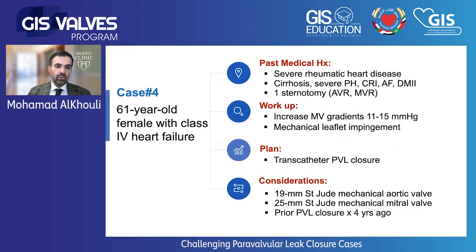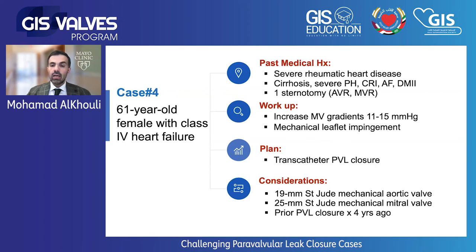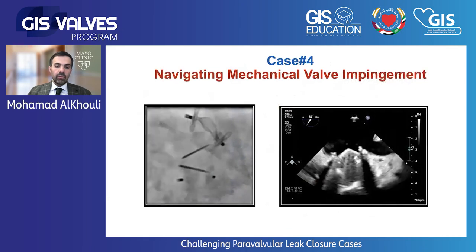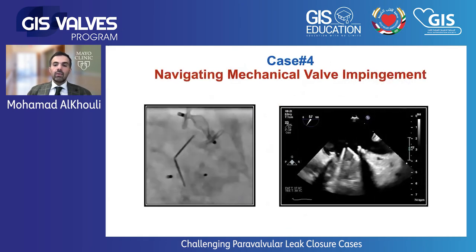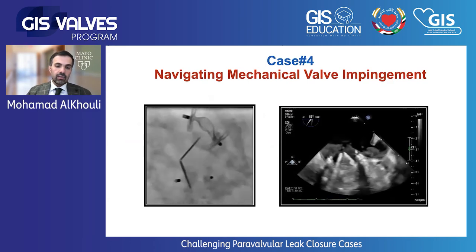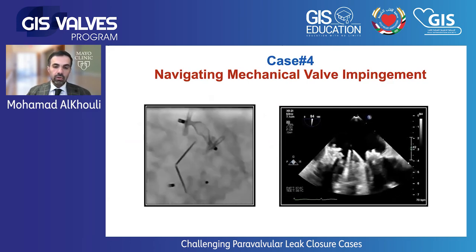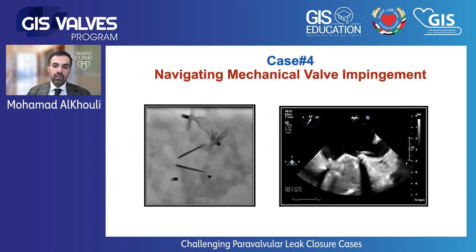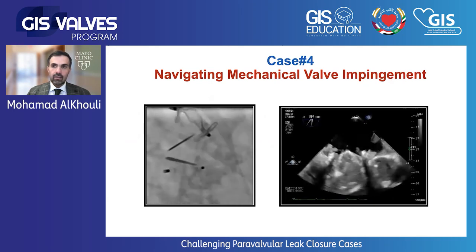Our last case is a 61-year-old female with class 4 heart failure. She has rheumatic heart disease, cirrhosis, severe pulmonary hypertension, one prior sternotomy, and two mechanical valves. The reason for presentation is different: she had paravalvular leak transcatheter closure done multiple times at other institutions, and now presents with high mitral gradients. On fluoro and echo, we found that one of the mechanical leaflets was restricted by a plug that had partially migrated into the leaflets.